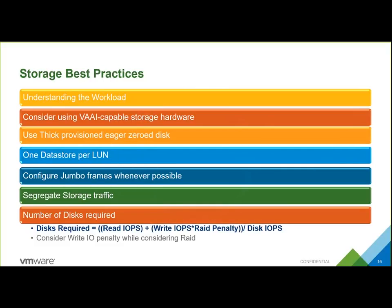The overall storage best practices: it's very important to understand the workload — what kind of workload you're running and what the requirements are. If you're using arrays, make sure you use VI-capable storage hardware, which gives you a lot more control and automation. Thin provisioning is the recommended approach. Also, you can have one LUN spanning multiple datastores, but that's not best practice as it brings a lot of inefficiency. As for networking, it's always recommended to use Jumbo Frames wherever possible, and it's recommended to segregate storage traffic.